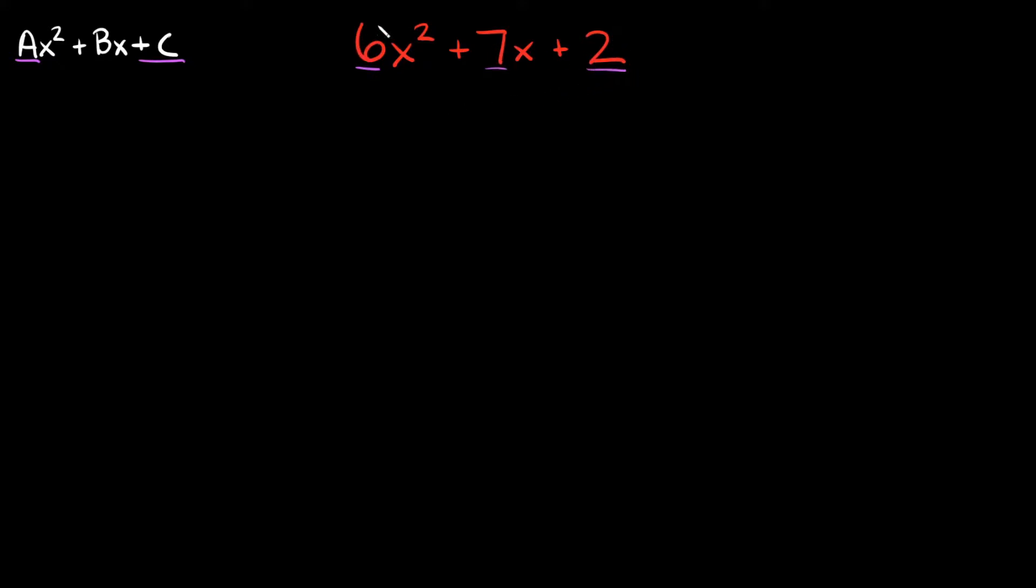The first thing you want to do is take your A and your C and multiply them together. So we're going to take 6 times 2 and multiply those two together.